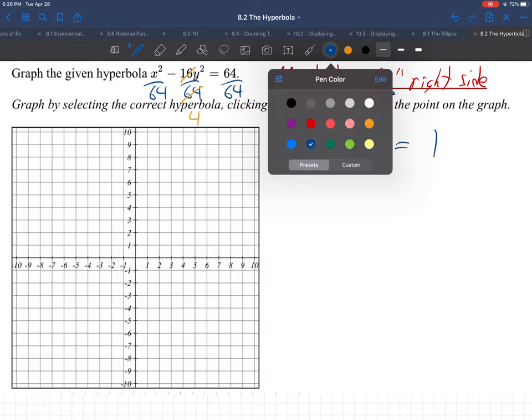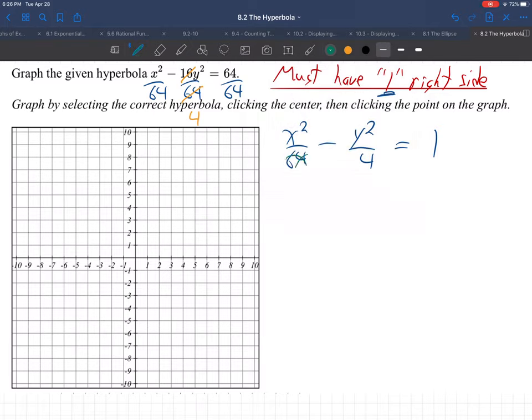And now, we just need to rewrite this as 8 squared and 2 squared. Now, we can go to the graph. Now, it's ready to graph.